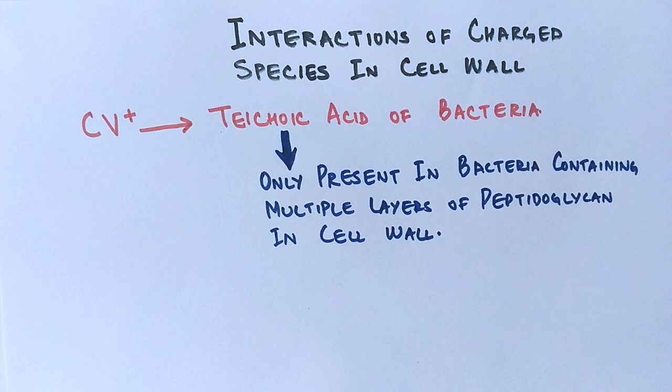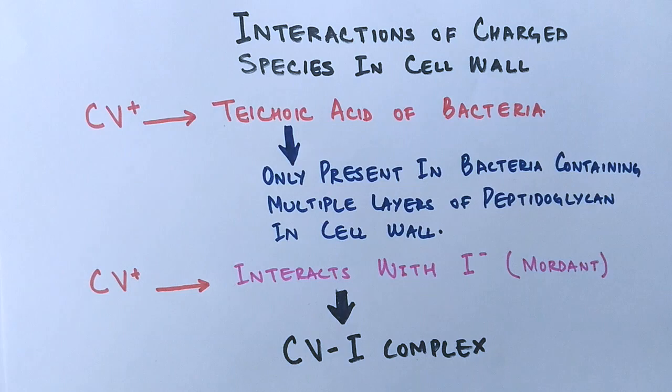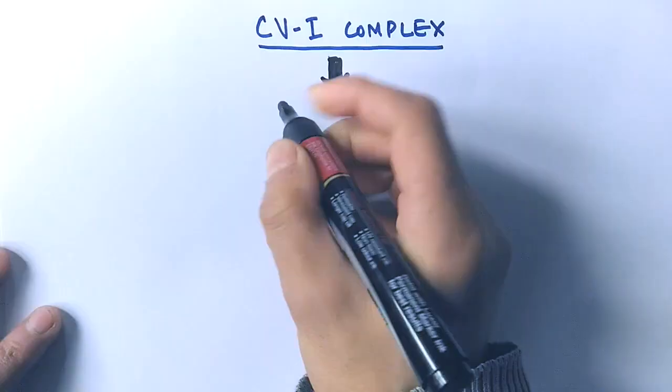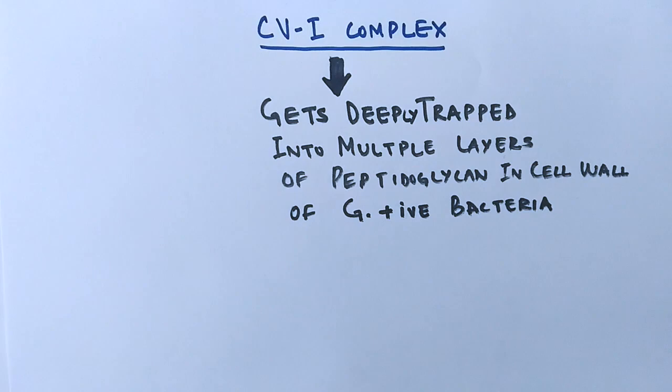The second molecular interaction is between crystal violet dye and the mordant, which is iodine. Here, CV positive interacts with I negative to form a CVI complex — that means the crystal violet dye forms complexes with iodine. This CVI complex gets deeply trapped into the multiple layers of peptidoglycan of Gram positive bacteria, while in Gram negative bacteria the CVI complex gets easily washed off because of the monolayer nature of the peptidoglycan in their cell wall.